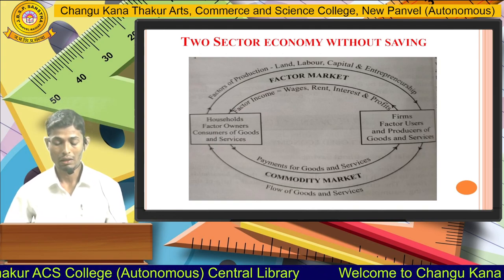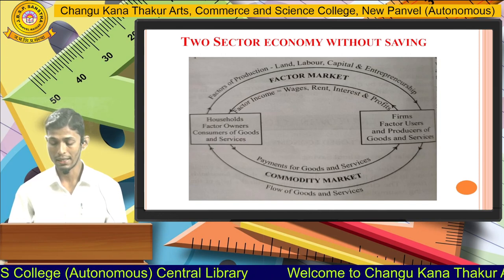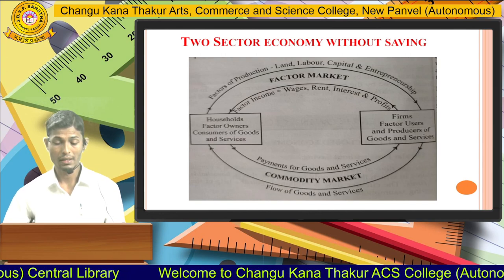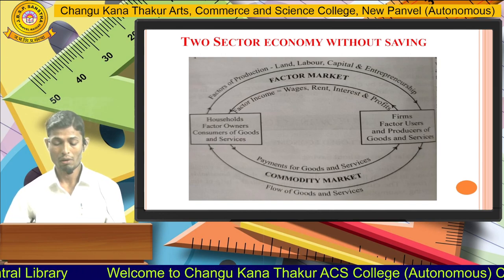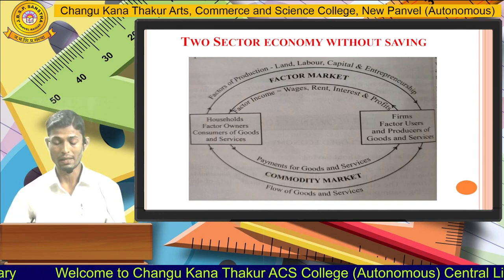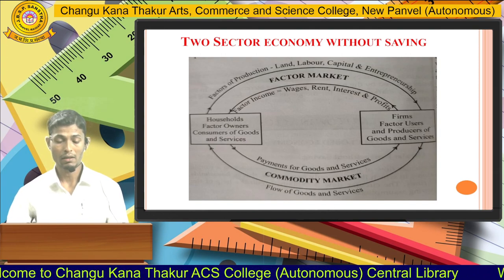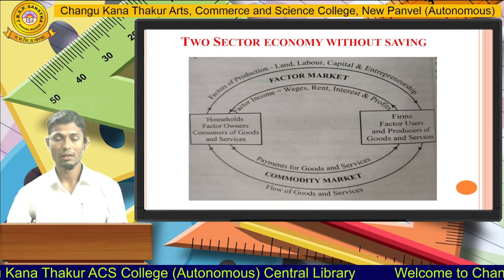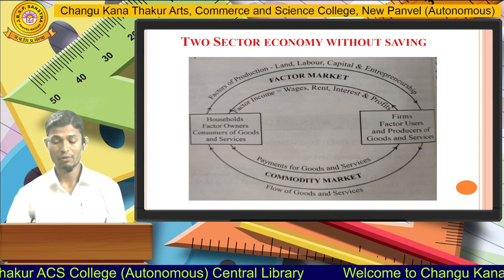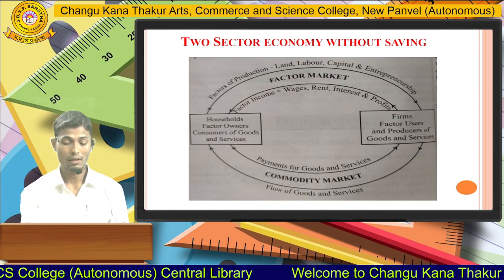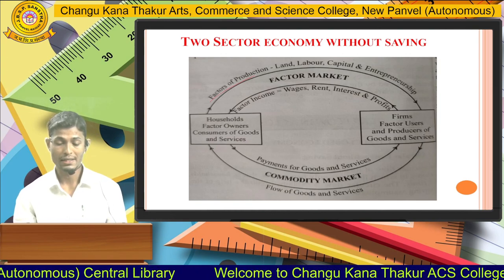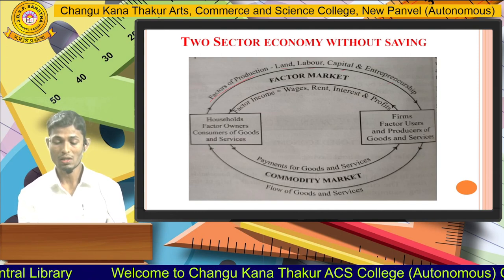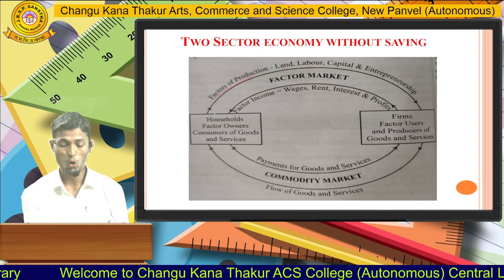As you can see in the diagram on your screen, the upper part indicates the factor market and the lower part indicates the commodity market. In the upper part, there are two players in the economy — households and firms. The factors of production, which consist of land, labour, capital, and entrepreneurship, are all owned by the households.